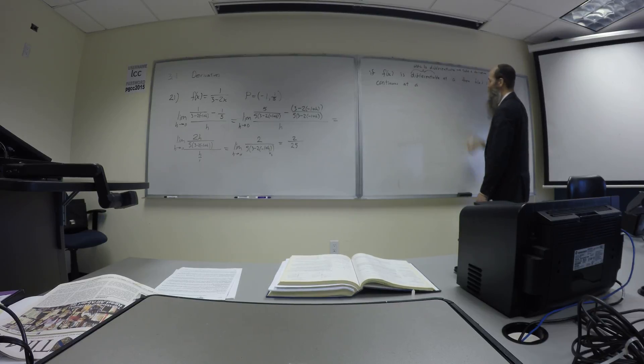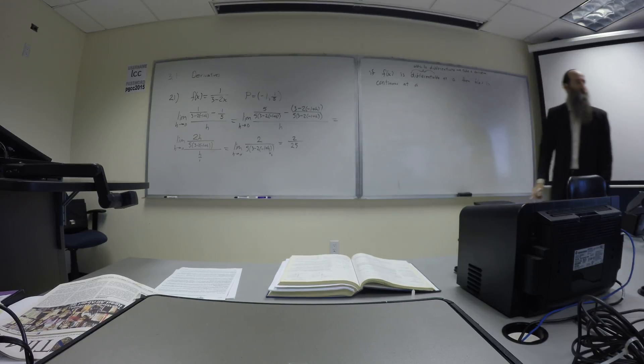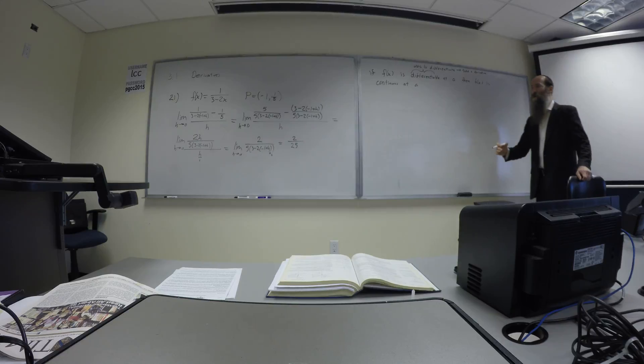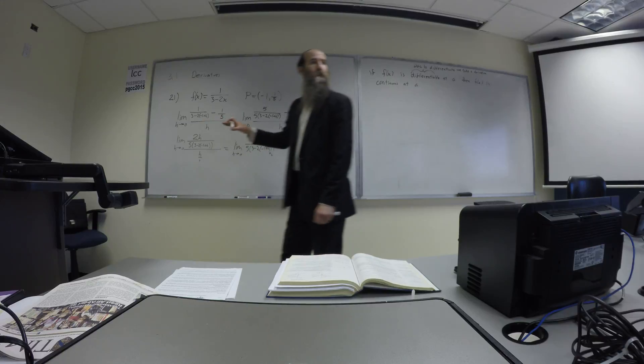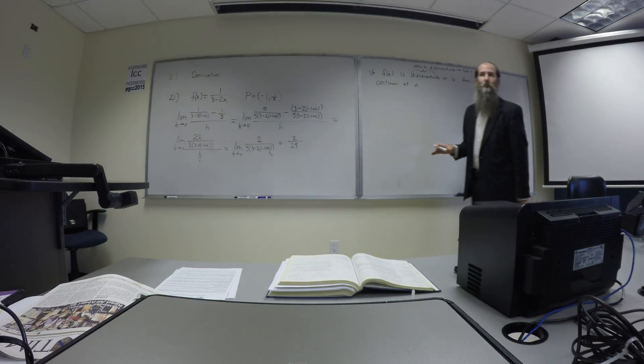Derivative. So in other words, if you're able to do the limiting process we talked about here, if you're able to find the slope of the curve there, then the function is continuous there.